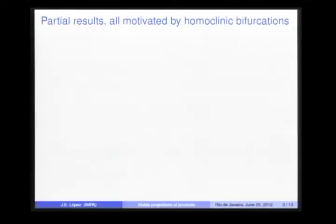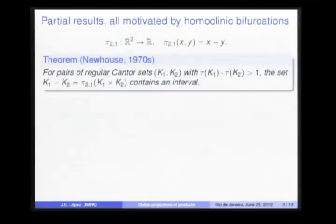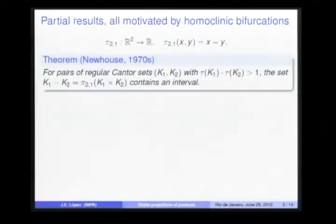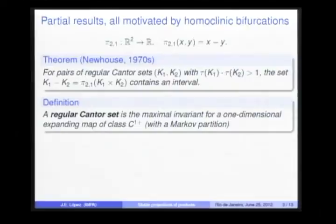The first general results in that direction were motivated by the study of homoclinic bifurcation. The first one was proved by Newhouse in the 70s, and says for a pair of regular Cantor sets with a product of thickness bigger than one, the arithmetic difference of the two regular Cantor sets contains an interval. A regular Cantor set is the maximal invariant for a one-dimensional expanding map of class C¹⁺ with a Markov partition.